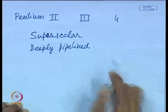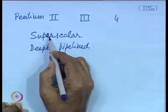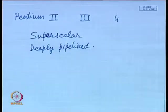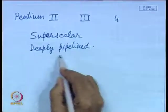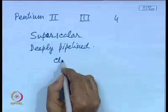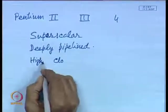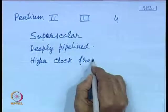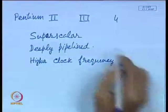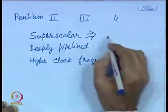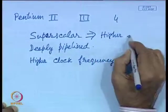In superscalar architecture, instruction scheduling and instruction issue is done with the help of hardware. Because of that, hardware complexity keeps on increasing as the complexity of instruction scheduling increases. Similarly, as you use a deeply pipelined processor, the clock frequency becomes higher. The superscalar processor also leads to higher silicon real estate.